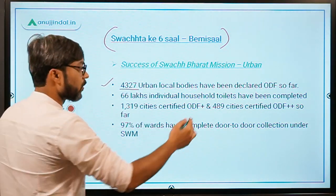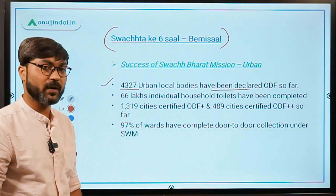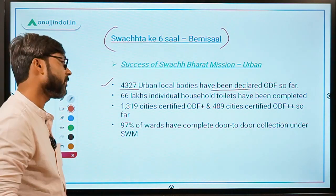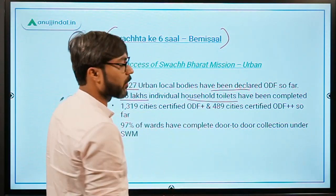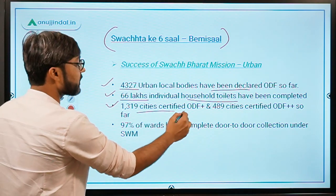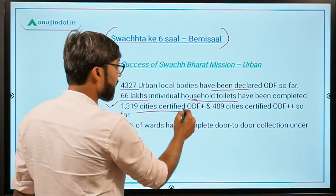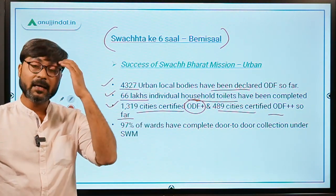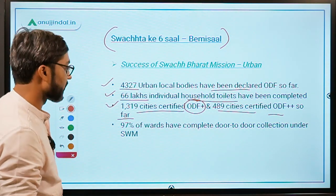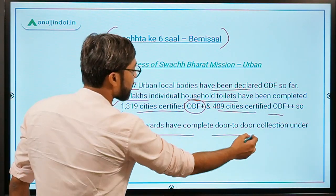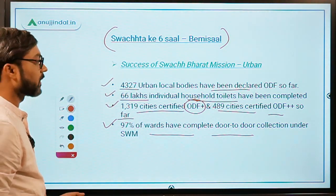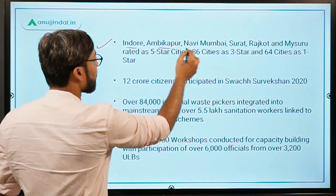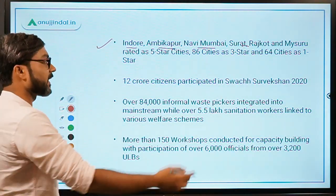Key data: 4,327 urban local bodies have been declared open defecation free so far. 66 lakh individual household toilets have been completed. 1,319 cities were certified as ODF Plus while 489 cities were certified as ODF Plus Plus. 97% of wards have completed door-to-door collection under Solid Waste Management. Indore, Ambikapur, Navi Mumbai, Surat, Rajkot, and Mysuru have been rated as 5-star cities.